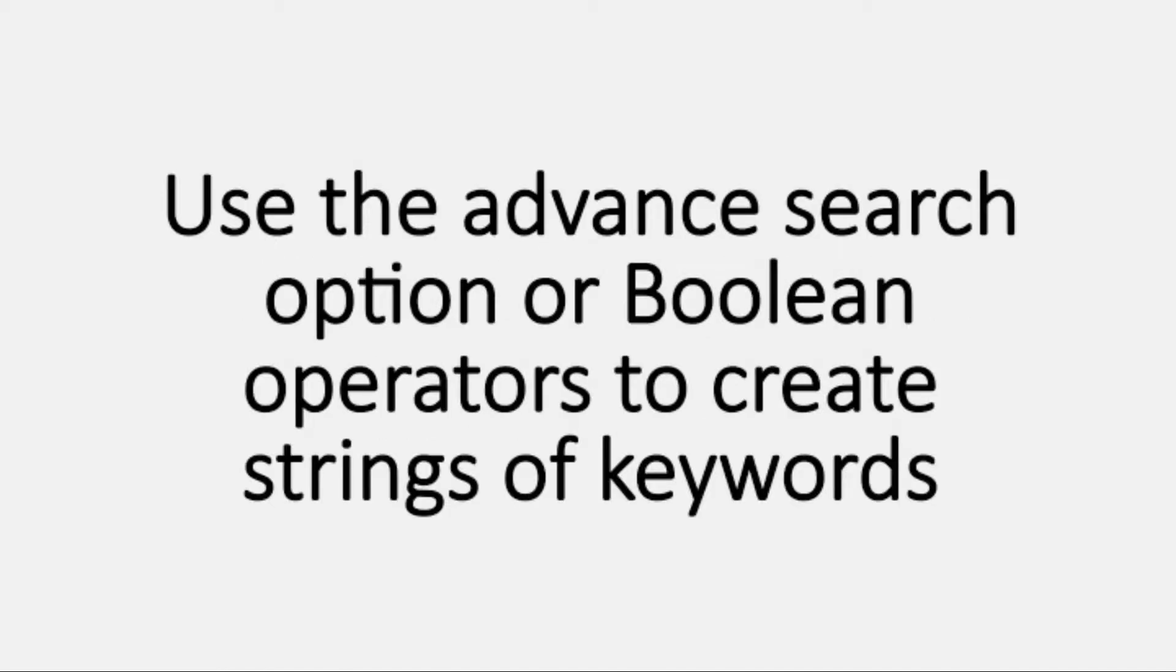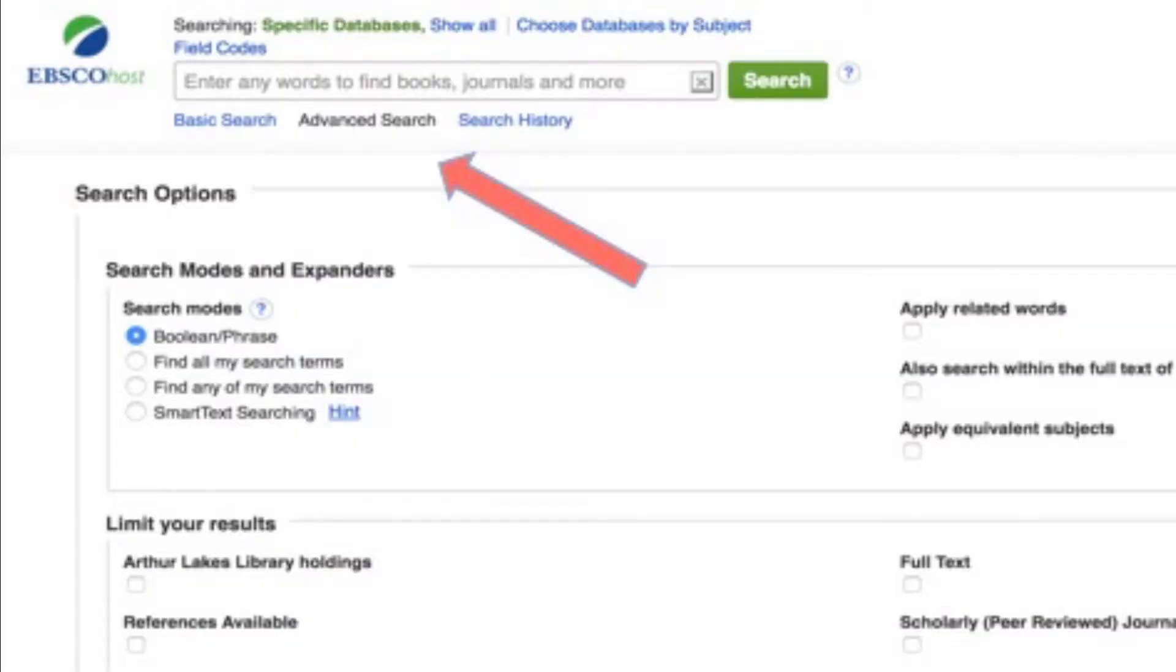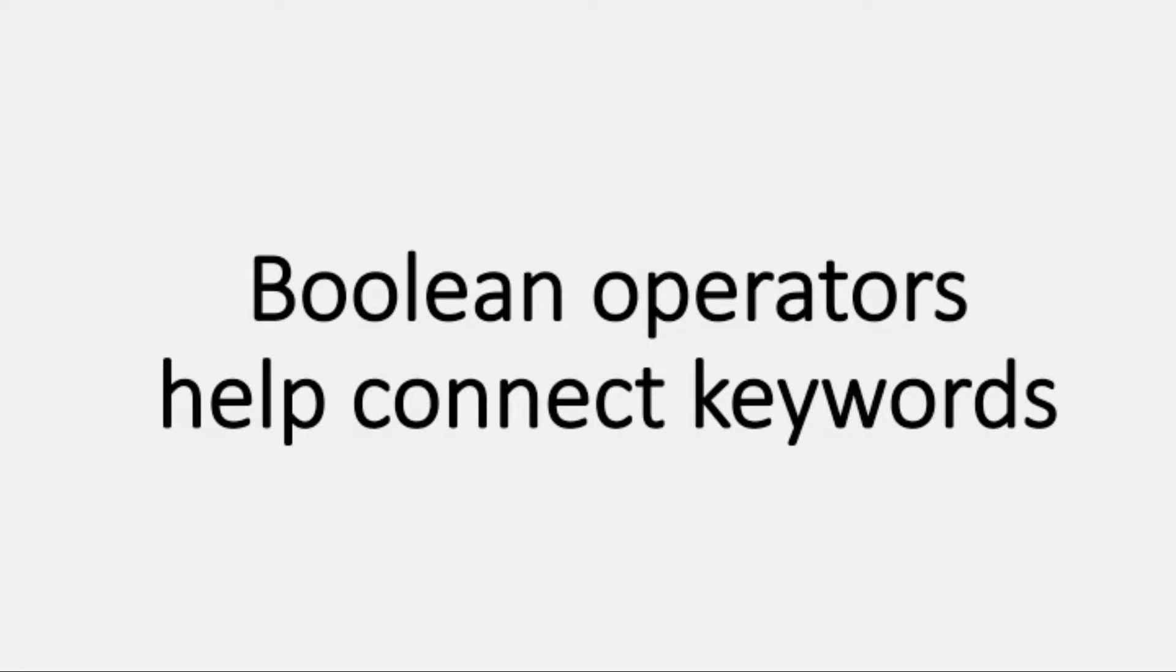You can create different strings of keywords by using the advanced search option found on many databases or by using Boolean operators. Boolean operators are important tools in keyword searching. Boolean operators separate keywords in a search and indicate that you are searching for multiple terms simultaneously.